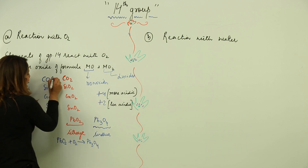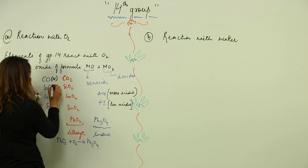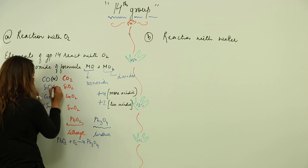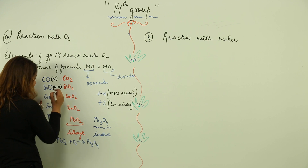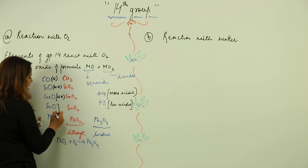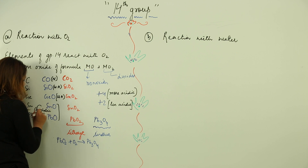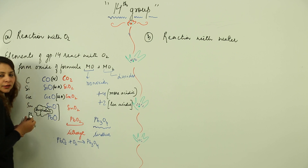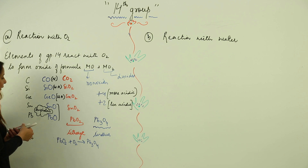Regarding the nature of the monoxides: carbon monoxide is neutral, silicon monoxide is weakly acidic, germanium monoxide is more weakly acidic, and tin monoxide and lead monoxide are amphoteric in nature — that means acidic as well as basic.